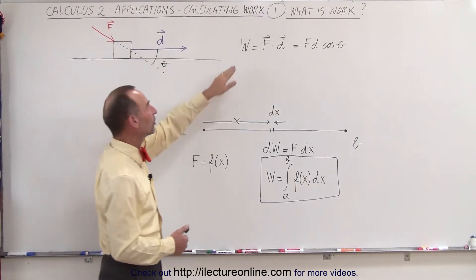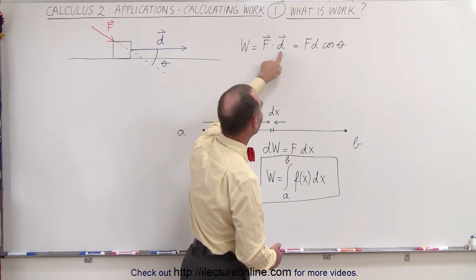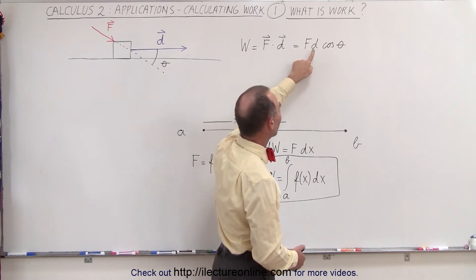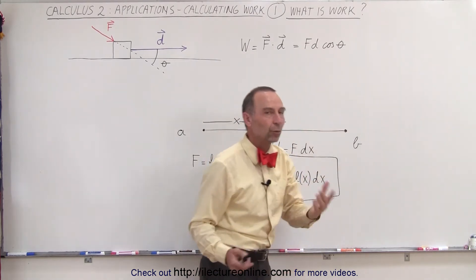we can then define the work done as being the dot product between the force applied and the displacement and therefore it is equal to the magnitude of the force times the magnitude of the displacement times the cosine of the angle between them.